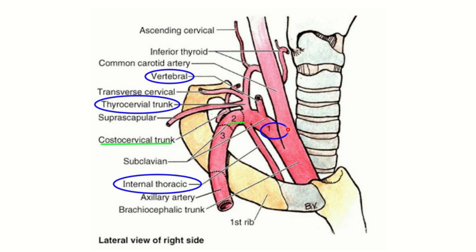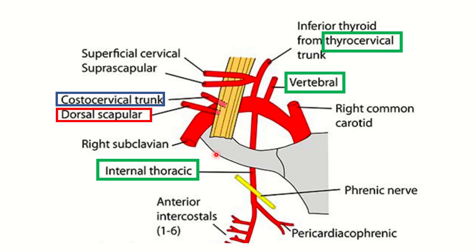From the first part, three branches arise: V for vertebral artery, I for internal thoracic artery, and T for thyrocervical trunk. From the second part, C — the costocervical trunk — arises. From the third part, D — the dorsal scapular artery — arises. The artery is divided into these three parts by muscles.